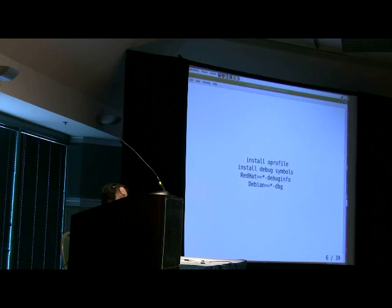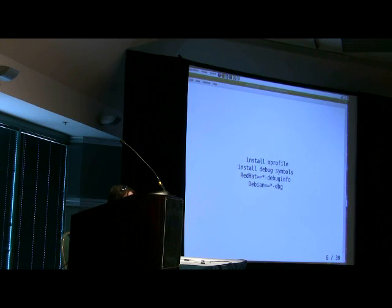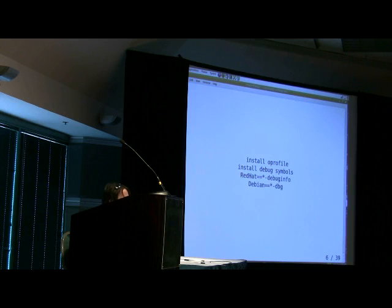It needs debug symbols so that it can print something useful rather than just an offset in a file, which wouldn't be very useful unless you can really read binary — in which case you've probably plugged the cable straight into your temple. So you want to install debug symbols for the things you're interested in. On Red Hat, these are often blah-blah-dash-debuginfo. On Debian, it's blah-blah-dash-dbg, which is short for debug — not short for database group.